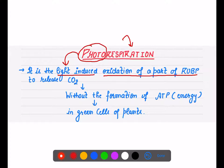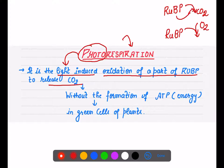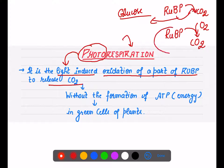Photorespiration is a light-induced oxidation of a part of RuBP. As you know, RuBP normally helps in the fixation of CO2 — it combines with CO2. But here, RuBP is combining with oxygen and releasing CO2, rather than producing glucose. So something different is happening in the photorespiration process.